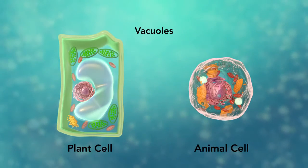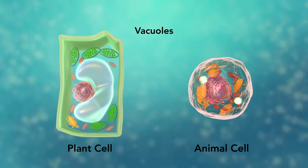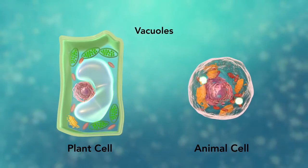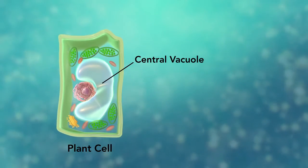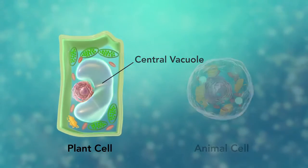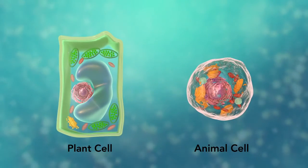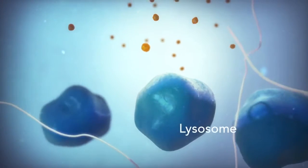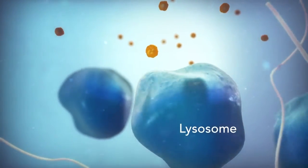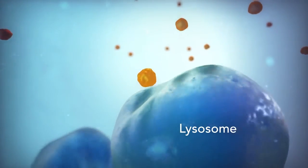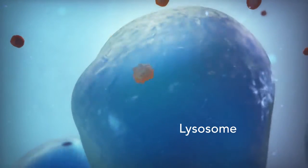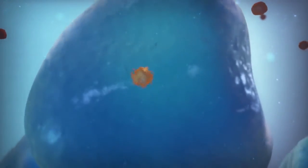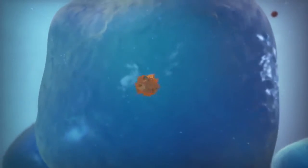Vacuoles are sac-like structures that store different materials. Here in this plant cell, the central vacuole stores water. Going back to the animal cell, you will see an organelle called a lysosome. Lysosomes are the garbage collectors that take in damaged or worn-out cell parts. They are filled with enzymes that break down this cellular debris.